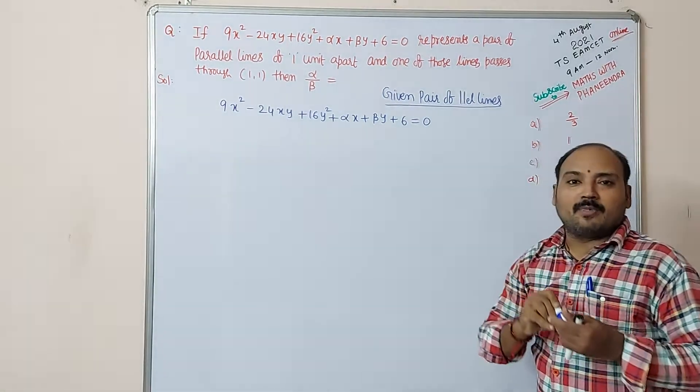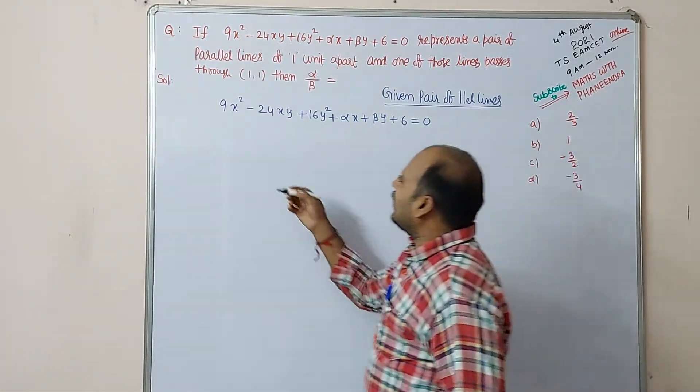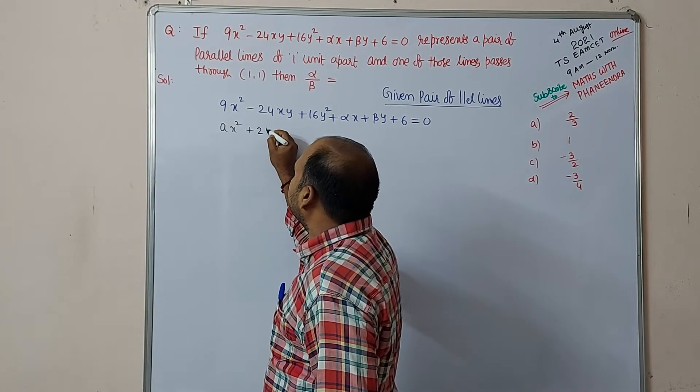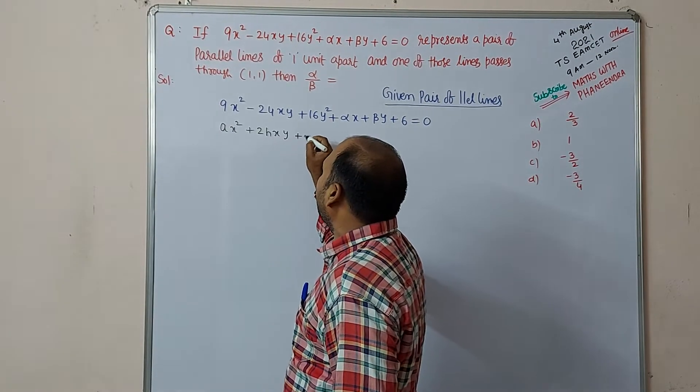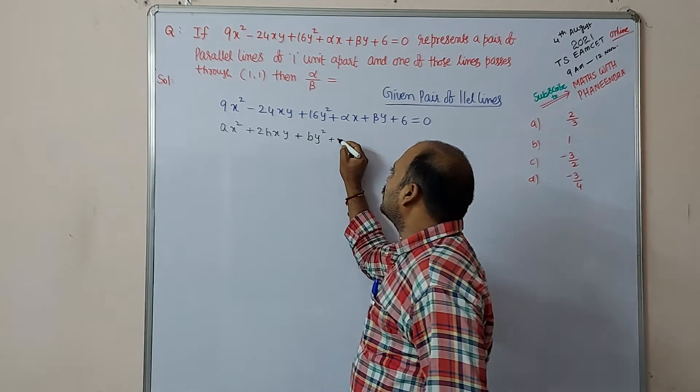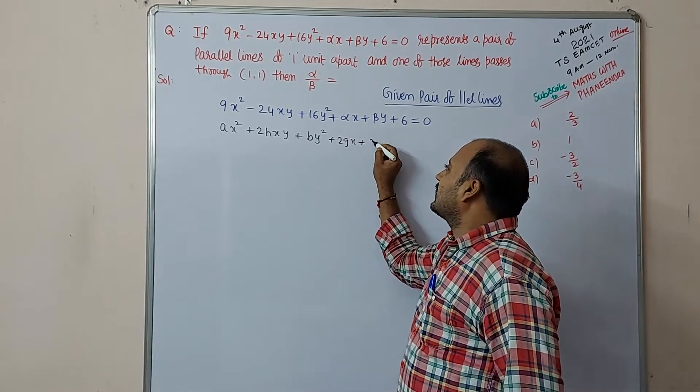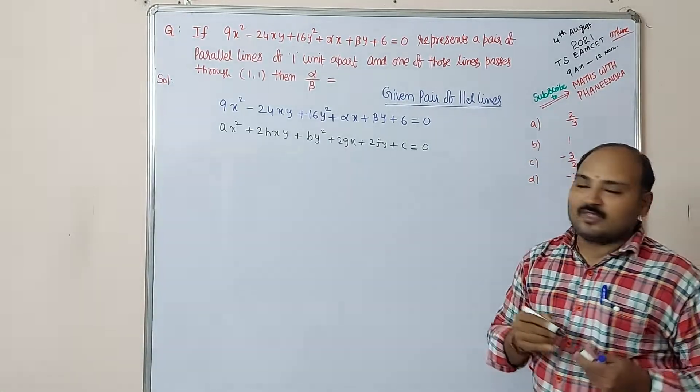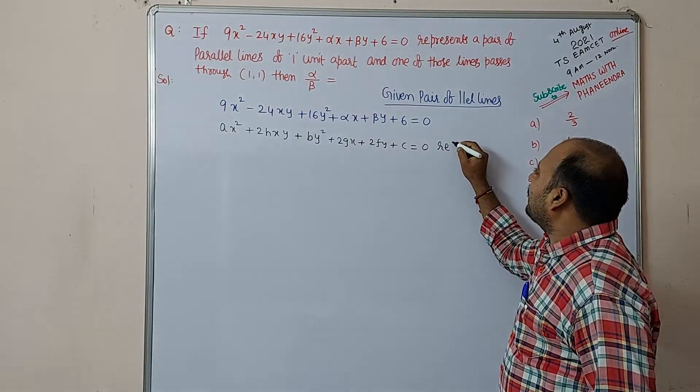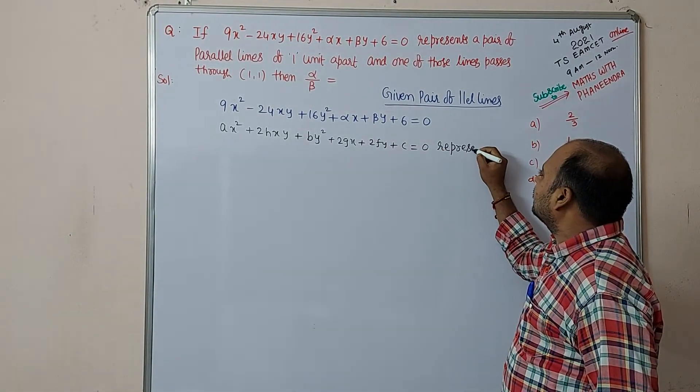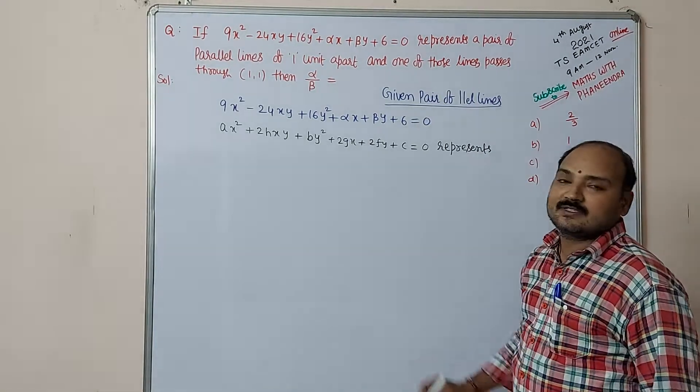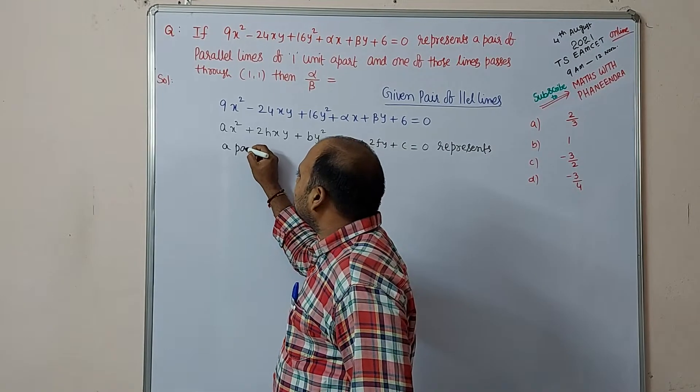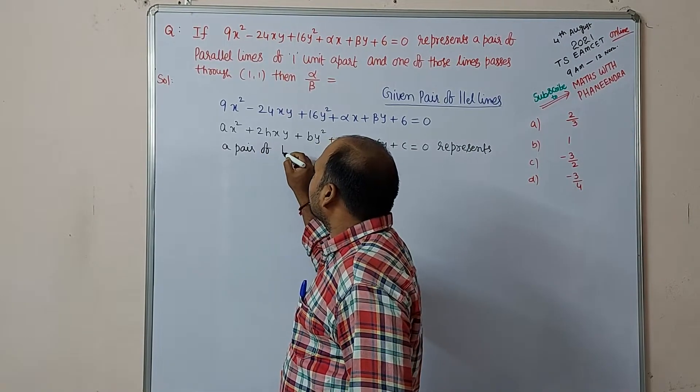Students, remember the pair of parallel lines compared with ax² + 2hxy + by² + 2gx + 2fy + c = 0 represents a pair of parallel lines. We have the condition there.